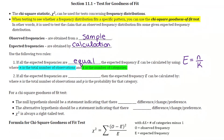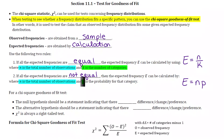If we do have information about how the categories break down percentage-wise, we're not going to let all the expected frequencies be equal — we'll use the information about the percentages of the categories. The calculation for that is E equals N times P, where N is still the total number of observations and P is the probability for each category. We'll do that calculation for each category within the problem.